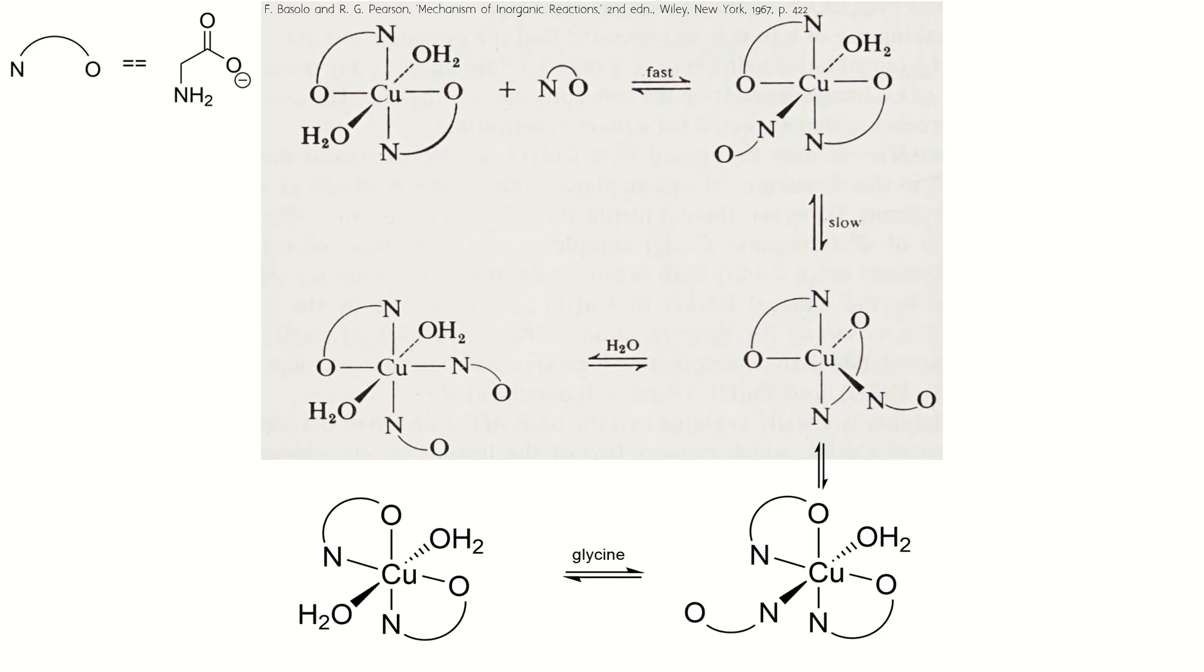Now in the last step, you can imagine one of the glycine molecules bound only by the amino group, leaving the ligand sphere and the other glycine binding with the carboxylic acid group, making our complex again.